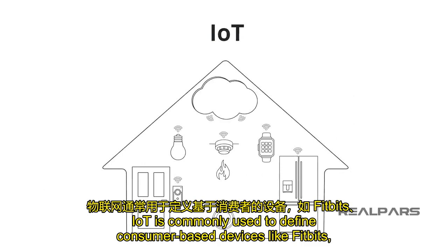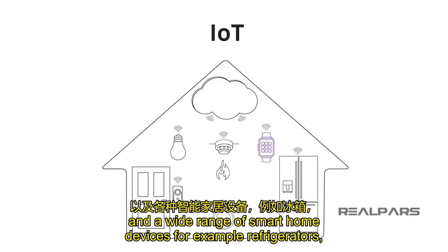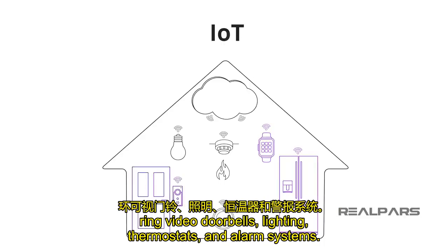IoT is commonly used to define consumer-based devices like Fitbits, and a wide range of smart home devices — for example, refrigerators, ring video doorbells, lighting, thermostats, and alarm systems.